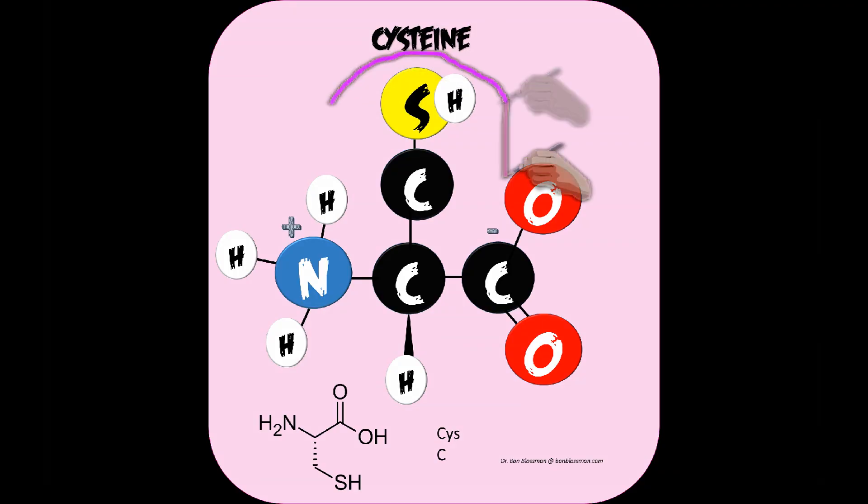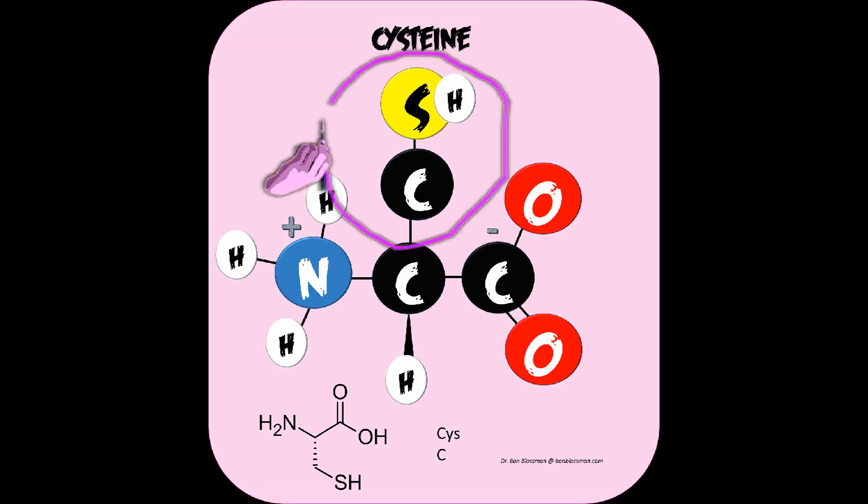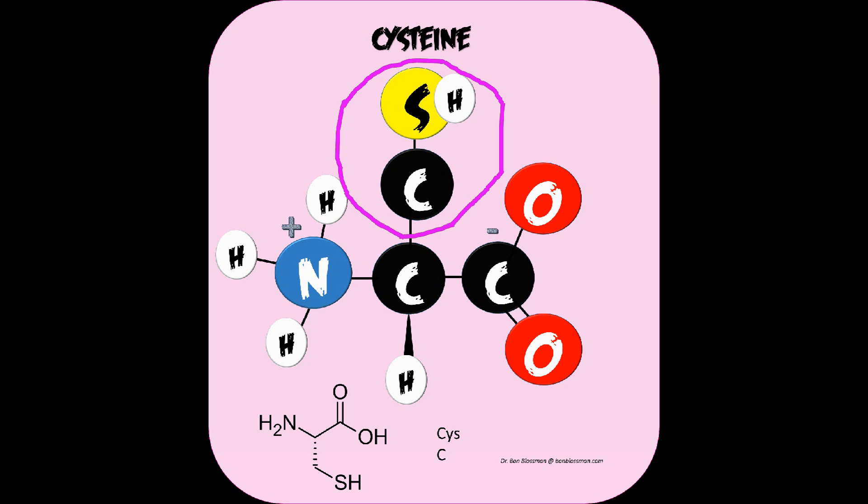Next is cysteine, and what is unique about it is that it has a sulfhydryl group on the terminal end attached to the beta carbon. The other sulfur-containing amino acid was methionine, which is in the hydrophobic group. With cysteine, instead of the sulfur being attached to another methyl group, the sulfur is attached to a hydrogen — therefore the CH2SH is a thiol group for the R-chain of cysteine.